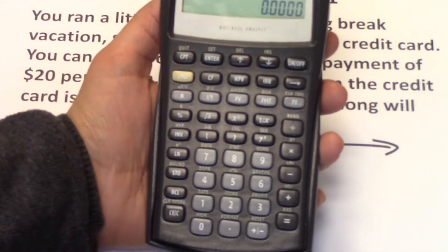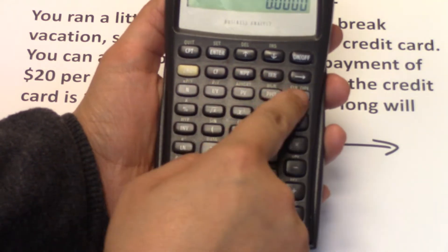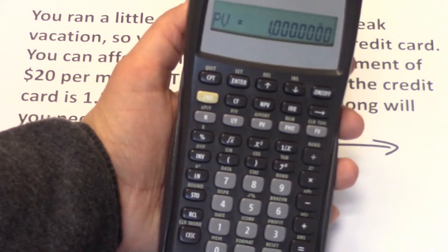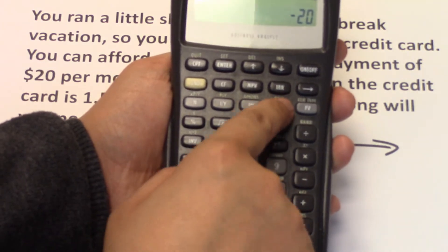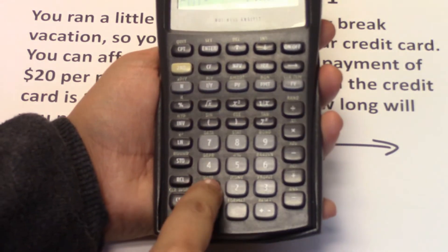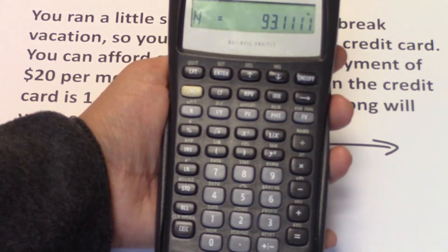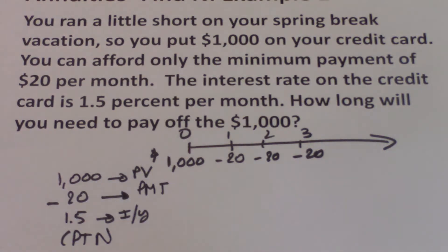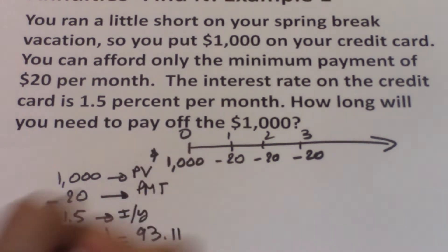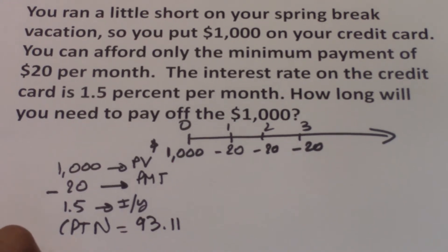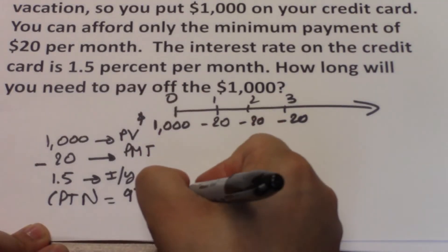So this is what we need to input. First, let's clear all our work: second FV, second CLR. $1,000 is PV. Negative 20 is the PMT. 1.5% is the I/Y. Compute N — and N equals 93.11. The payment is made every month, and the interest rate we used is a monthly number, so N is in months: 93.11 months.